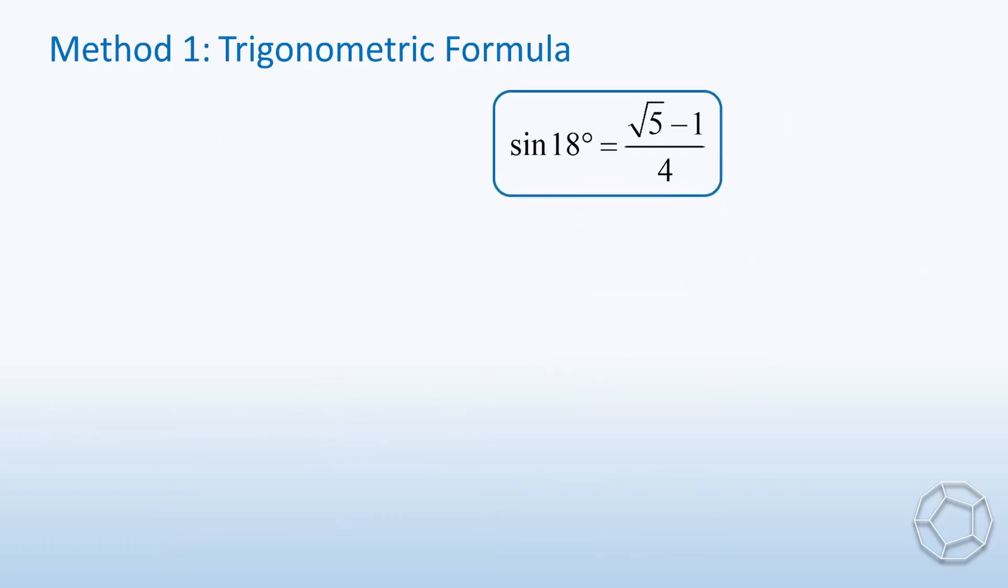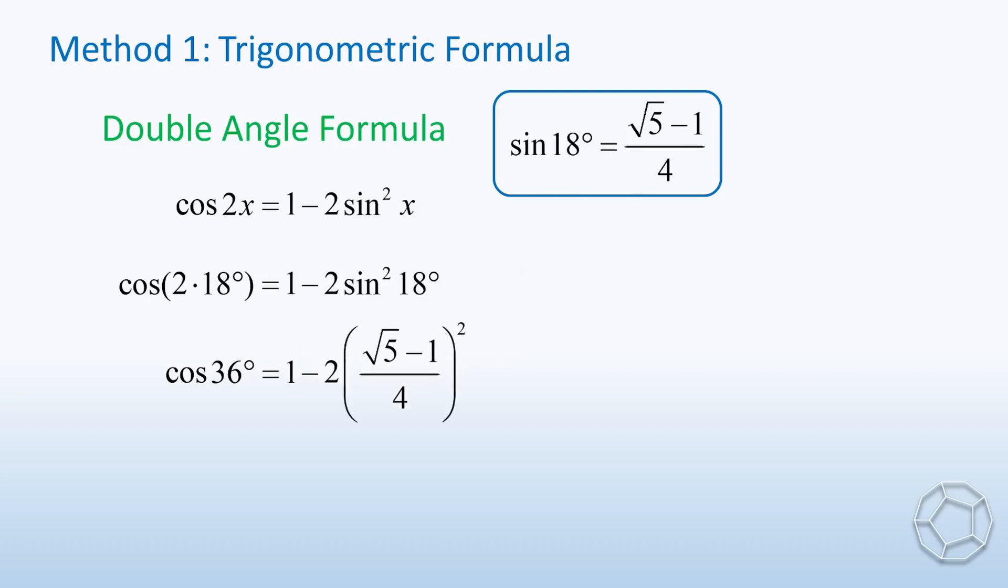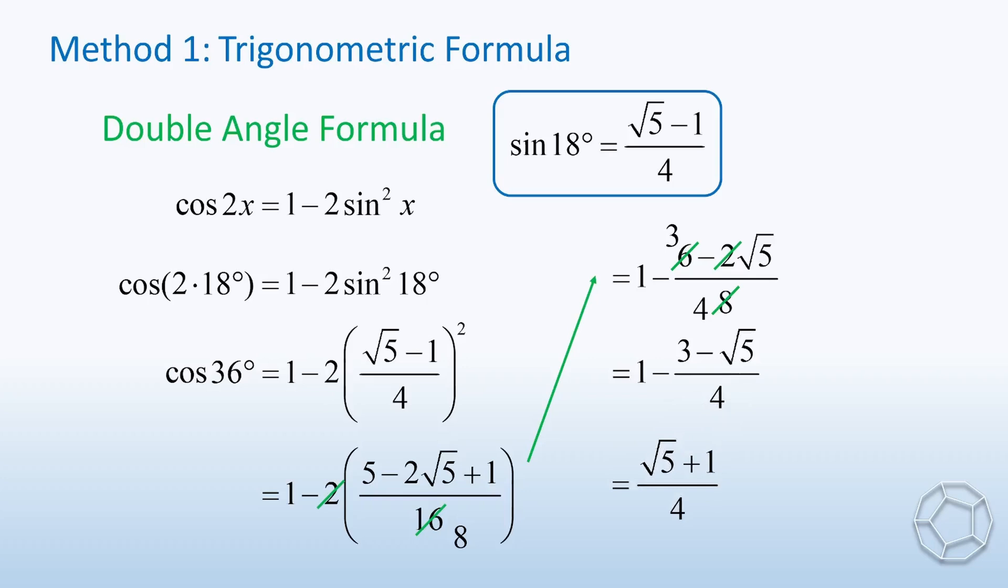Let's move on to cosine 36 degrees. We make use of another double angle formula. Cosine 2x is equal to 1 minus 2 sine square x. Put x equals to 18 into the equation. Then, the left-hand side is cosine 36 degrees. Now, we put the value of sine 18 degrees from above. Expand and simplify. The rest of the steps are straightforward. You may pause the video for a while to read them in detail.